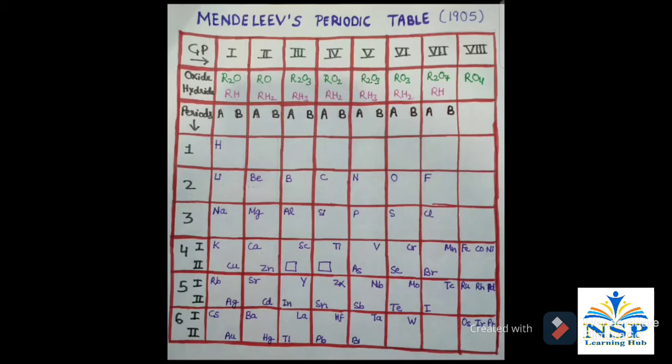When he started his work, 63 elements were known. He tried to correlate the atomic weight of elements with their physical and chemical properties. He used hydrides and oxides of elements to explain his work.